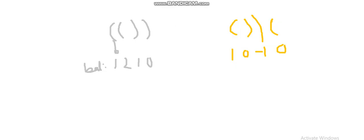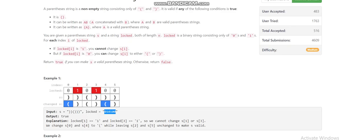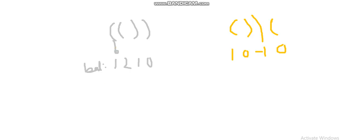If the value of balance goes below zero somewhere, we need to change some closed parentheses to open parentheses. We can keep track of the count of unlocked closed parentheses — that is, closed parentheses whose corresponding locked value is zero, meaning we are allowed to change them.